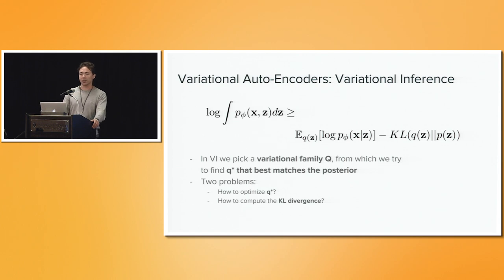We can rewrite this objective to get an evidence lower bound, where following variational inference, we pick a variational family Q to restrict our search space of latent manifold distributions, and we try to find a Q star that best matches our posterior for each data point.